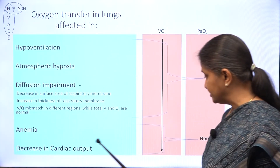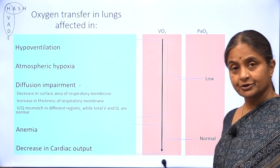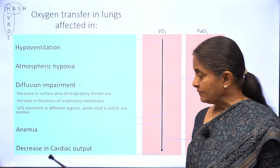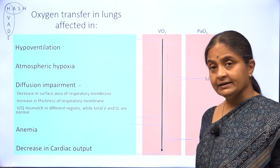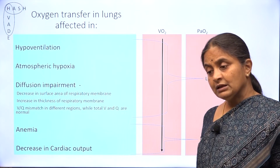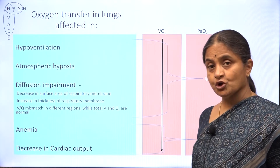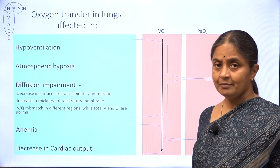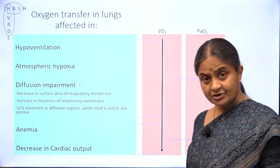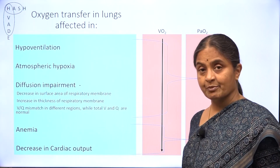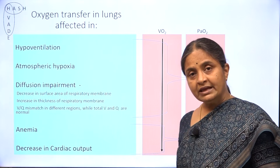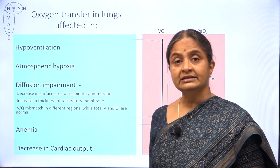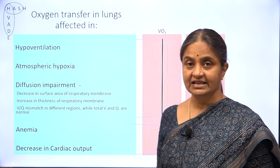Arterial PO2 is not affected in anemia or cardiac failure. In anemia, the content of arterial oxygen is lower. In cardiac failure, even arterial oxygen content is normal, but what is impaired is the amount of oxygen delivered per minute because blood flow is slower — what we call stagnant hypoxia. We will now look at carbon dioxide diffusion and apply the same framework.